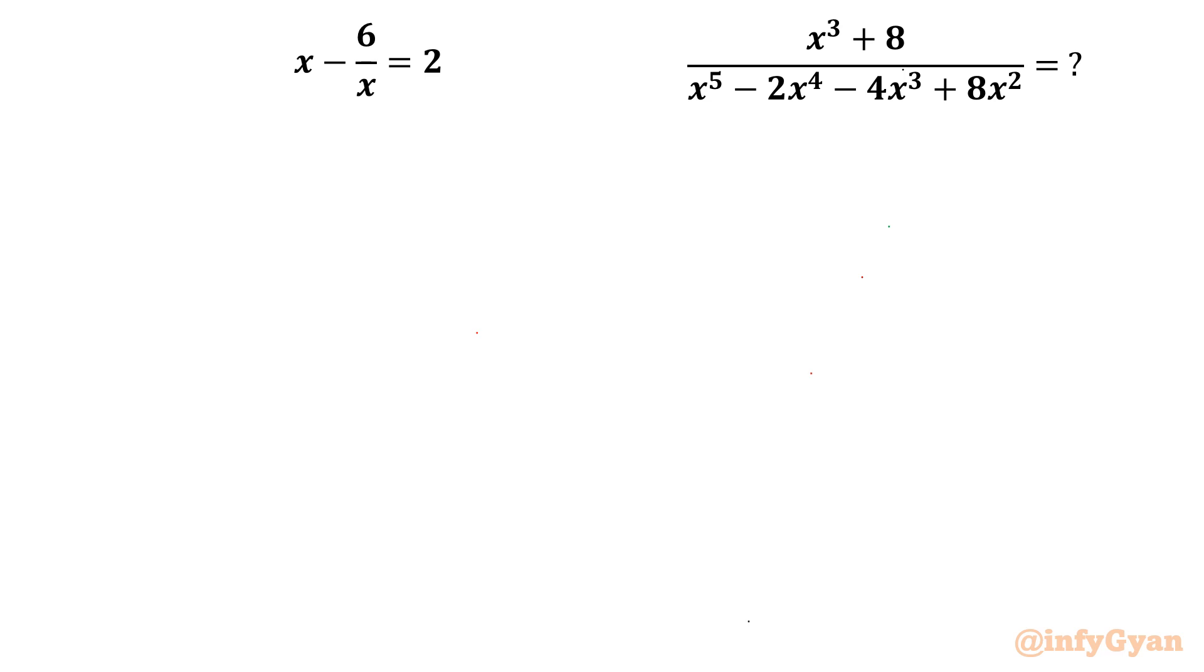The very first problem is if x minus 6 over x is given to us as 2, then we have to evaluate the expression x cube plus 8 over x power 5 minus 2x power 4 minus 4x cube plus 8x square. This is our problem number 1.